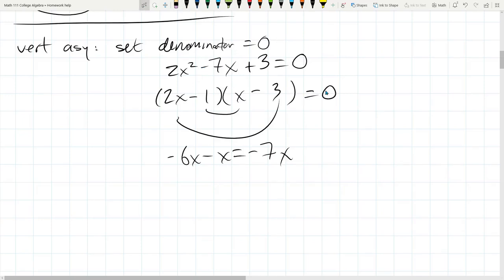This product equals zero. So that means 2x minus 1 is zero. Or x minus 3 is zero. If x minus 3 is zero, x is 3. And 2x minus 1 is zero. That means 2x equals positive 1. x is 1 half. These are the answers. Let's make sure they're in the right form.